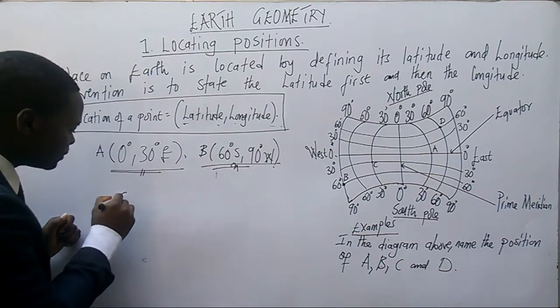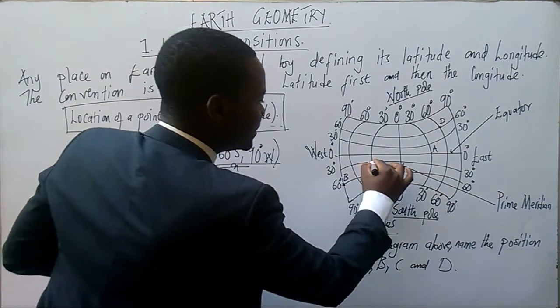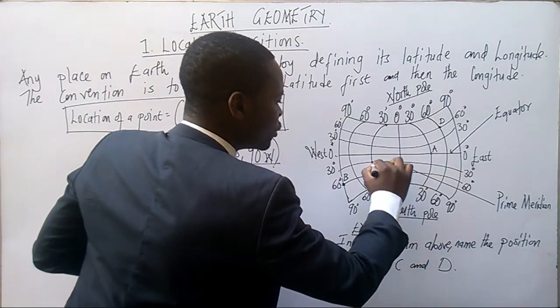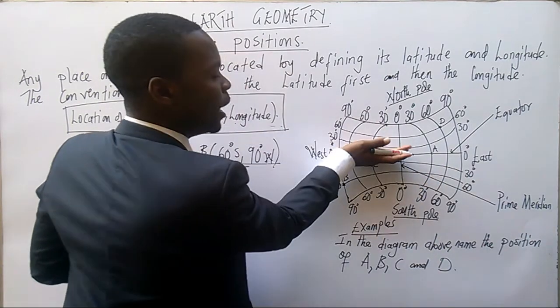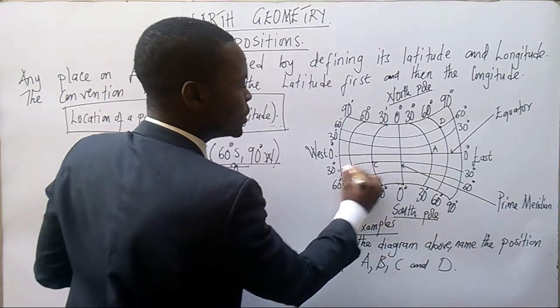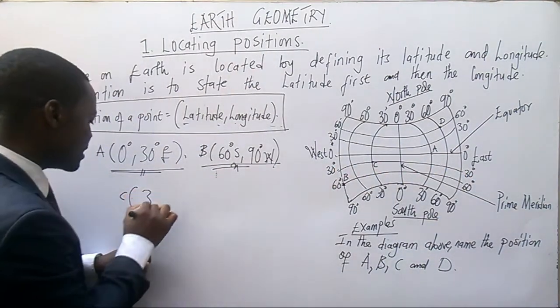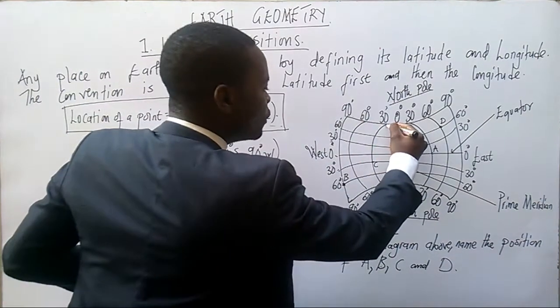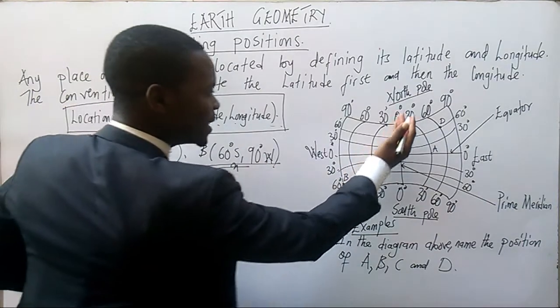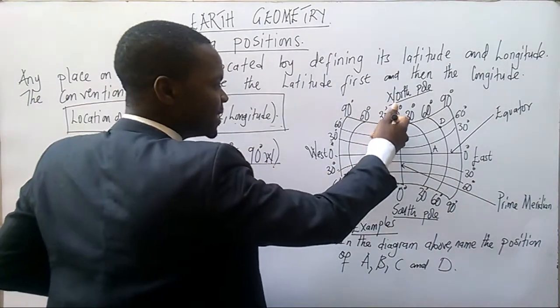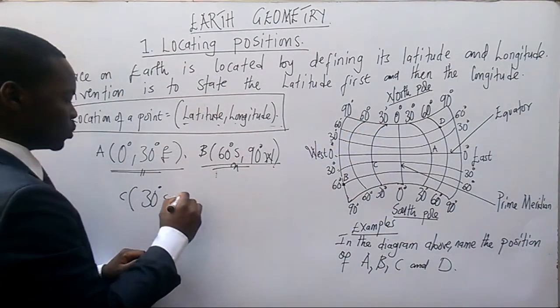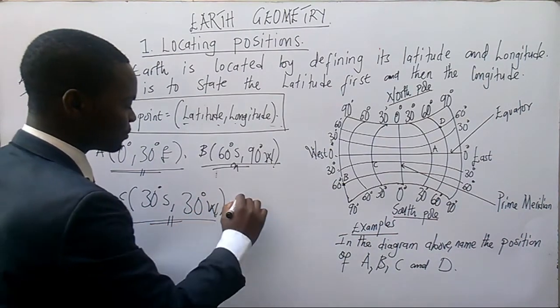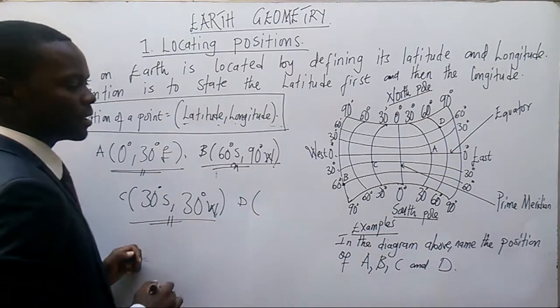Then we go to C. Where is C? This is C. This is our latitude. This is our longitude. C, it's on the south part. Therefore, we say 30 degrees south, comma. It's also on the west part. So what is our west part? This is 30 degrees as well, 30 degrees west. Very simple there. Very simple calculation. Very simple topic. Earth geometry.